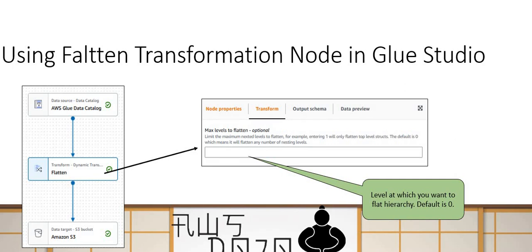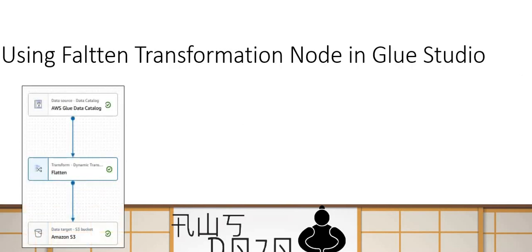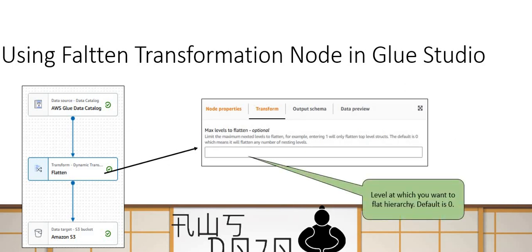The Flatten node configuration is pretty straightforward — it has only one field which is Max Level to Flatten. By default this value is zero, meaning flatten to the root level. But if you want to flatten only one or two levels below root, you can enter a value of one or two. If you don't configure anything, it defaults to zero and flattens everything to the root level.